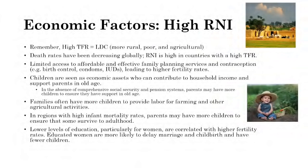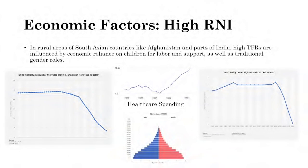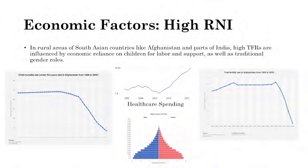Educated women are more likely to delay marriage, leading to lower children per woman in developed countries. In rural areas of South Asian countries like India and Afghanistan, high TFRs are influenced by economic reliance on children for labor and traditional gender roles. Data shows that Afghanistan's child mortality rate has been decreasing exponentially with significant healthcare spending increases, while its TFR has declined from about 7.6 to about 4.5.